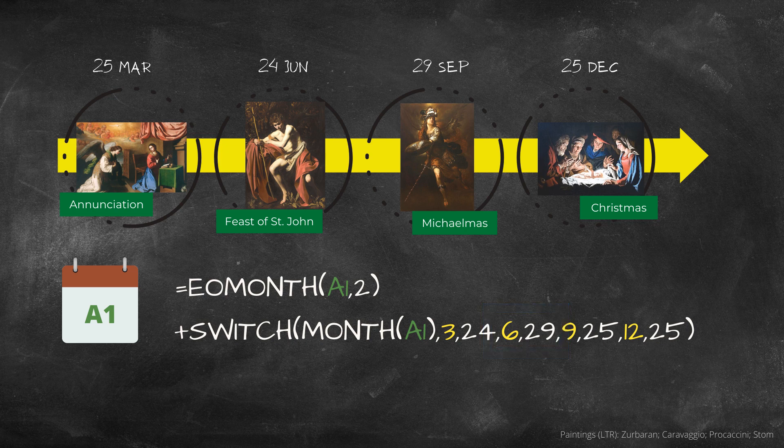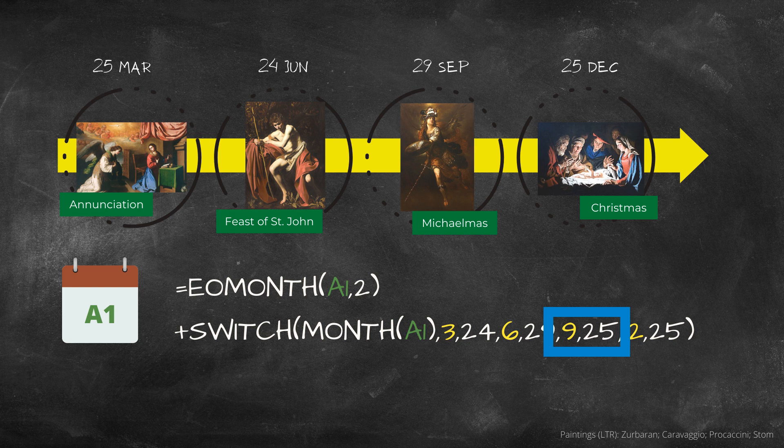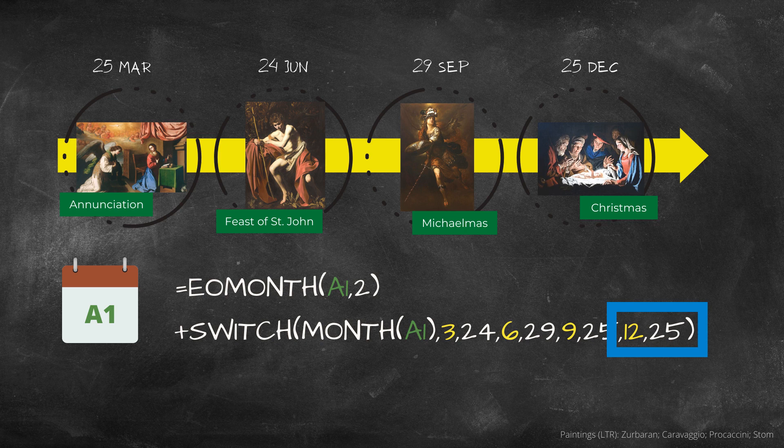If the month of the previous date is nine, you need the December quarter day, and so the number of days you need there is 25. And finally, if the month of the previous date is 12, well then you need the March quarter day, albeit in the following year. But we know the number of days we'll need is 25.